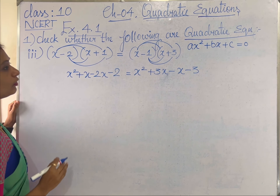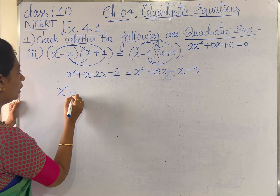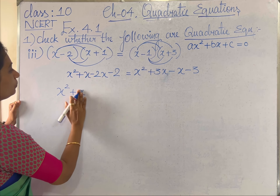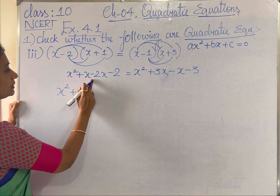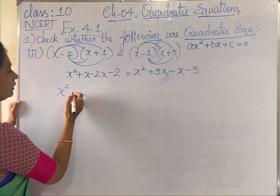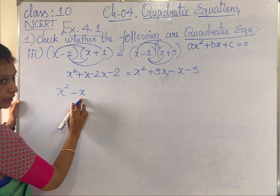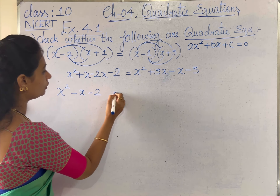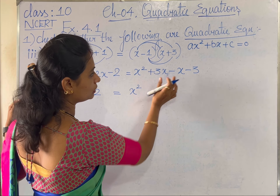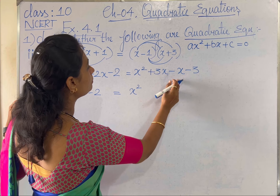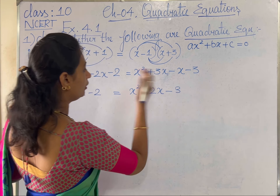We will bring all the constant terms and variables to the same side. On the left hand side, x minus 2x simplifies to minus x, so we have x² minus x minus 2. On the right hand side, 3x minus x simplifies to plus 2x, giving x² plus 2x minus 3.